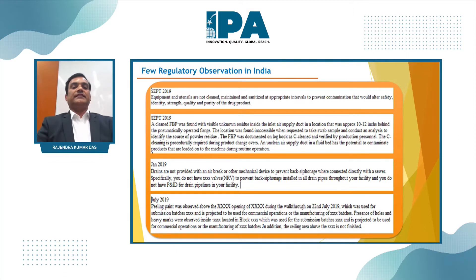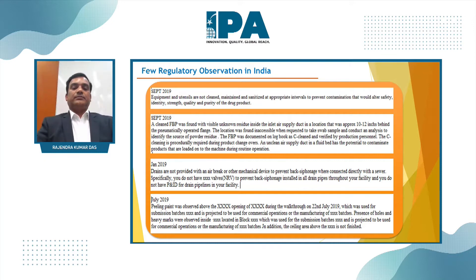Recent regulatory citations related to contamination include: September 2019 - equipment and utensils not cleaned, maintained, and sanitized properly; September 2019 - processors found visibly unclean or with foreign material; January 2019 - drain and drainage system lacking adequate design controls to prevent backflow; and July 2019 - paint peeling off the building, not maintained properly, leading to cross-contamination.